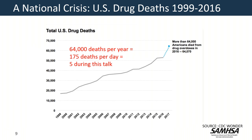This slide shows the alarming rate of drug overdoses in the United States from 1999 to 2016. This is all drug deaths — 64,000 deaths per year in 2016. If you do the math, that calculates out to 175 deaths per day. And just during this talk, five people will die from drug overdoses.